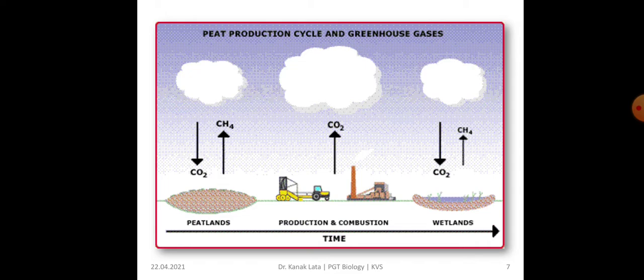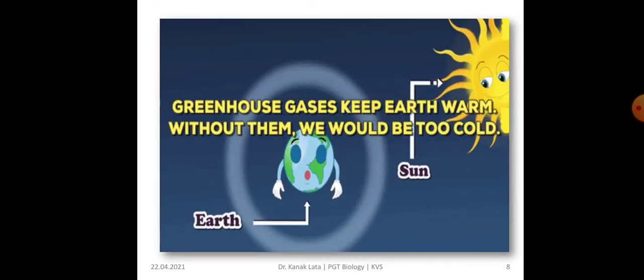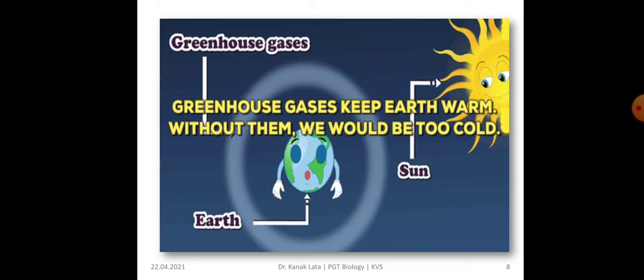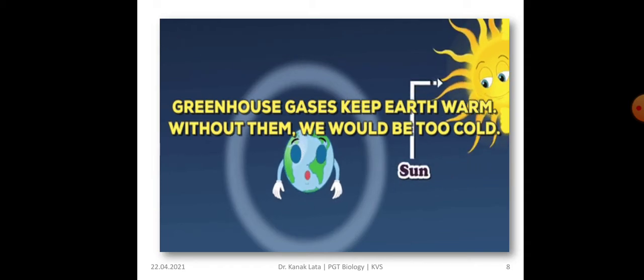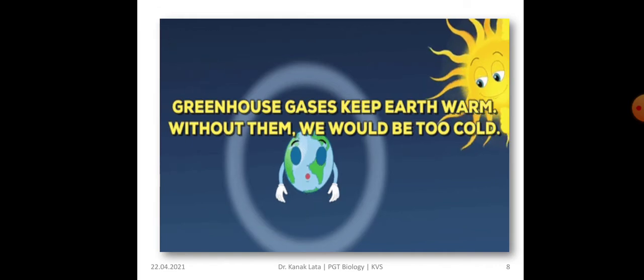So these gases which have the tendency to absorb the heat radiated by the surface of earth are called greenhouse gases. This figure shows about different greenhouse gases production. In the given figure, it shows that greenhouse gases keep earth warm. Without them, we would be too cold.